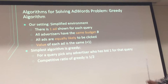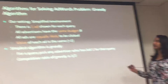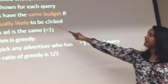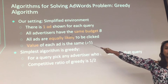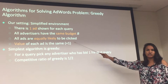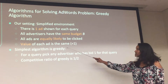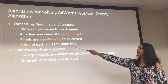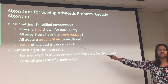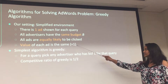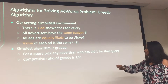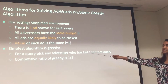We just talked about the simple algorithm. Now I'm going to talk about the greedy algorithm for solving the adwords problem. Our basic setting is that for each query we're going to show one ad, and all advertisers have the same budget B. In real life budgets can differ, but every ad is equally likely to be clicked, and the value of each is taken as one.